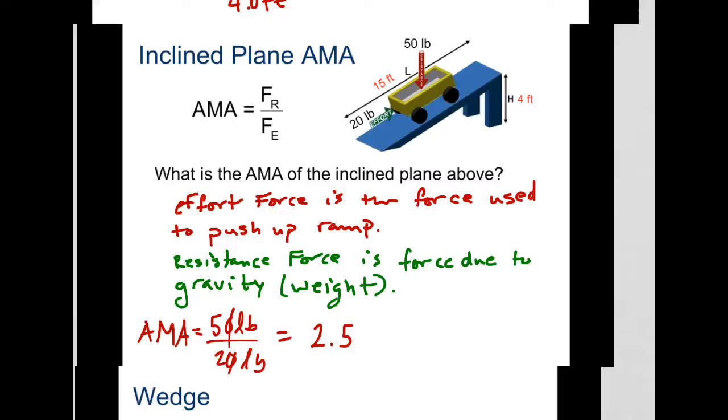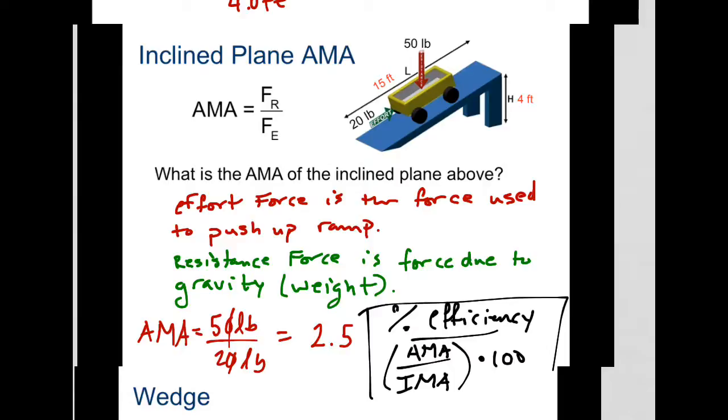I'm just going to write that formula down to refresh your memory. So the percent efficiency is just the AMA divided by the IMA times 100. You can see how efficient this thing is at lifting the object. It's not very efficient because you have to travel a lot more distance, but it will feel easier. Isn't that nice?